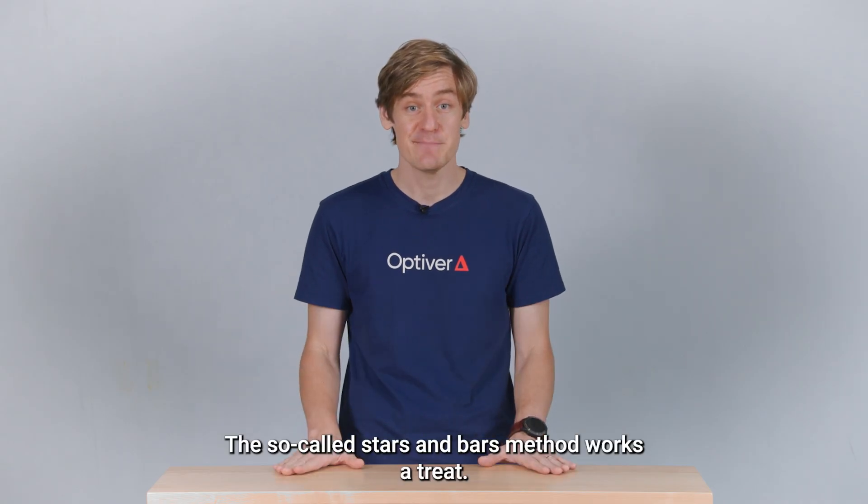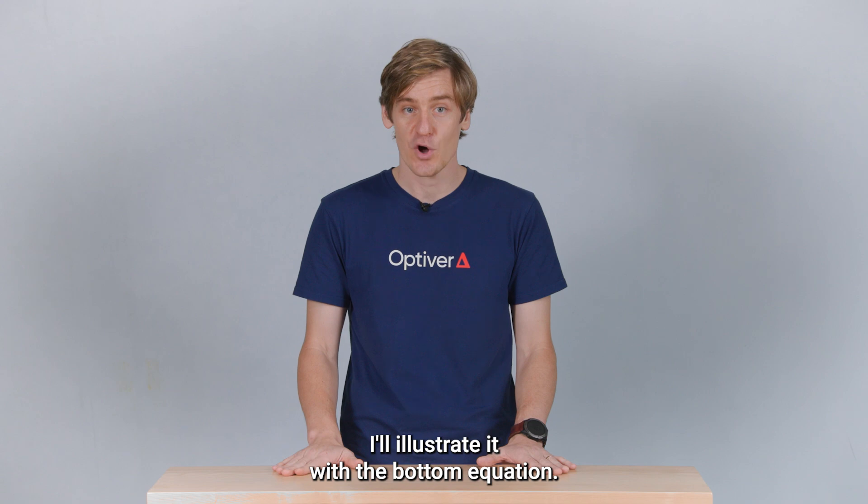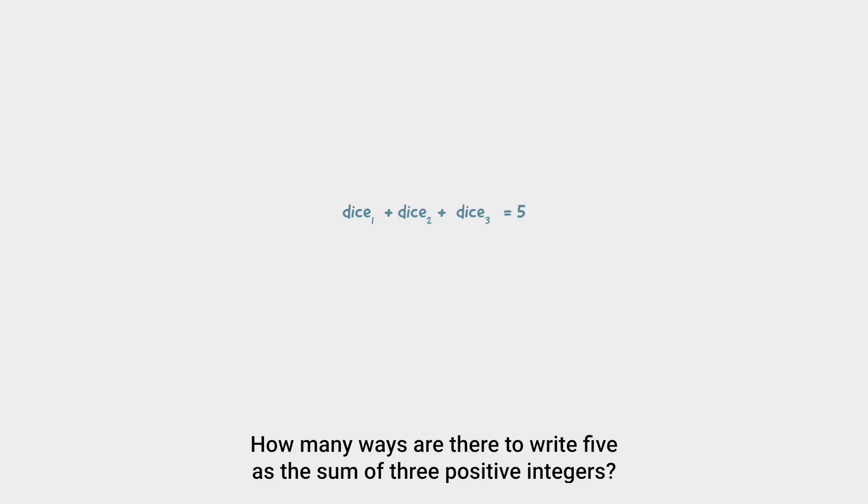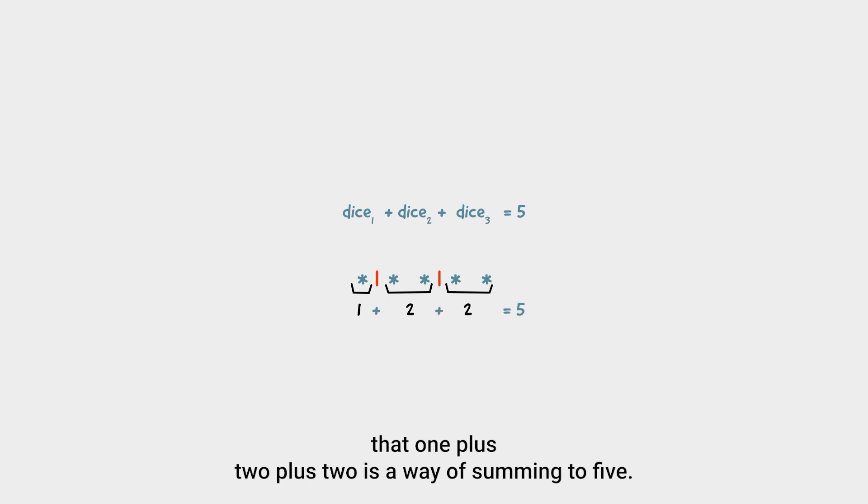The so-called stars and bars method works a treat. I'll illustrate it with the bottom equation. How many ways are there to write five as the sum of three positive integers? Well, simply take five stars. We want to split this up into three smaller pieces. And we can do this by inserting two bars into the four possible spaces between the stars. For example, something like this illustrates that one plus two plus two is a way of summing to five. Therefore, to count all possible ways that three dice can sum to five, we just count all possible ways we can insert two bars into the above row of stars. Well, there are four spaces, so the answer is four choose two.